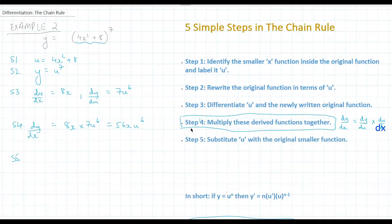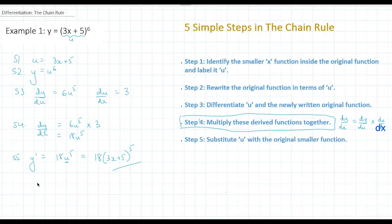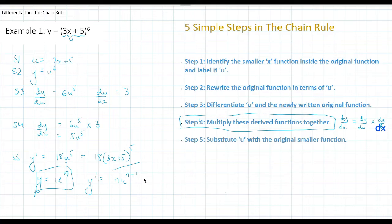Step five: substitute u back in the answer. So dy/dx is 56x(4x² + 8) to the power of 6. In short, when you have a function of the form u to the n, it derives to nu to the n minus 1, multiplied by the derivative of u.